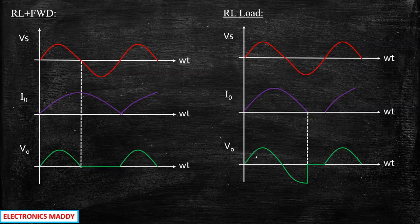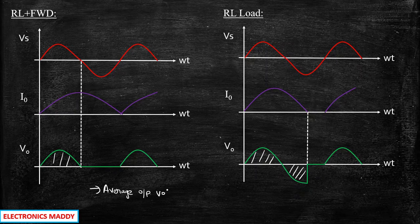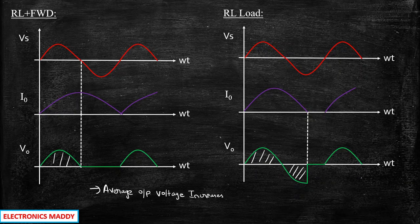If you carefully observe, the average output voltage vout was much lower without the freewheeling diode, because the waveform had both positive and negative portions that partially cancelled out when averaged. In this case, with only the positive portion contributing, the average output voltage increases by using a freewheeling diode. Additionally, previously the current went to zero at some point in the negative half cycle, but with the freewheeling diode the current continues to flow through the load continuously.